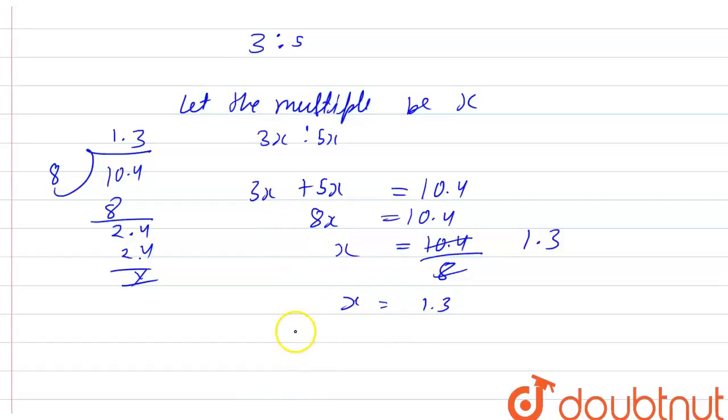If value of x is 1.3, then 3x will be equal to 1.3 into 3. If I do 1.3 into 3, it will be 3 times 3 is 9, 3 times 1 is 3. Decimal will come after one digit because there is only one digit after decimal. So 3x will be 3.9.